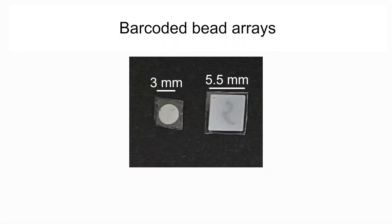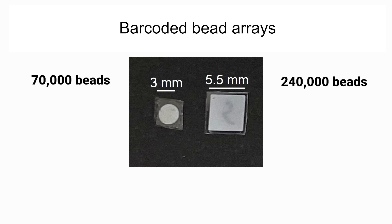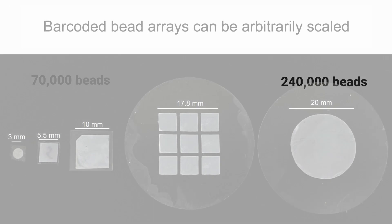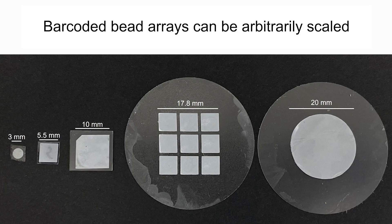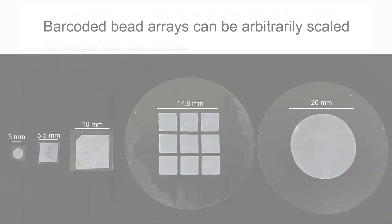Another key point is that the tagging procedure only introduces 10 minutes of upstream workflow time to any single nucleus RNA sequencing platform. In the lab, we mainly manufacture two flavors of arrays: square 5.5 by 5.5 millimeter arrays and circular 3 millimeter diameter arrays. On each square array we place approximately 240,000 beads, and on the circular arrays approximately 70,000 beads. These arrays are scalable — we can change both the shape and the size to fit the tissue we want to profile.